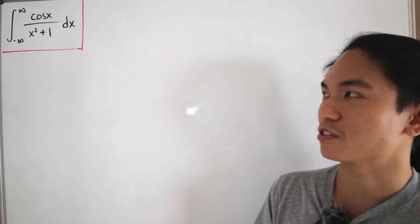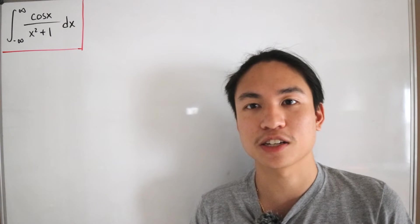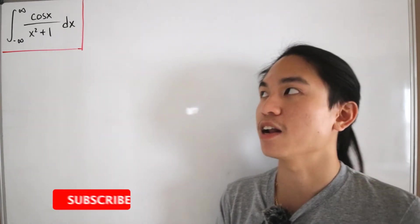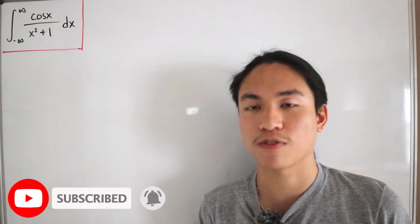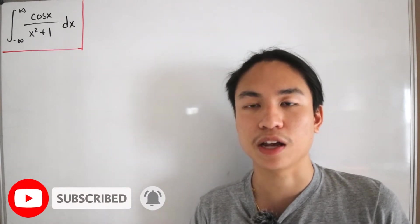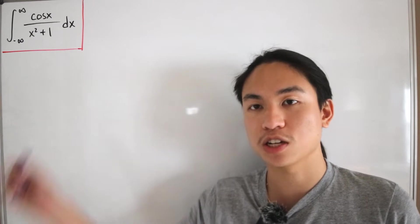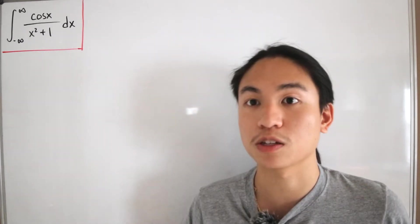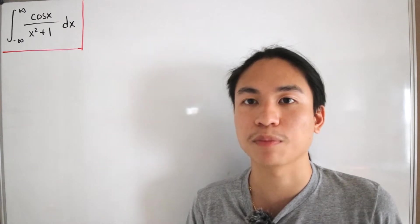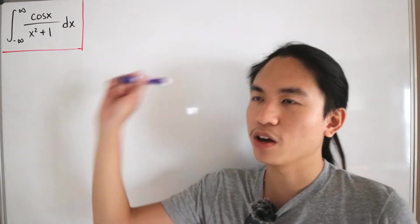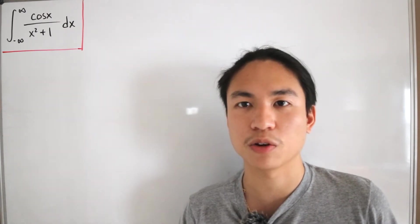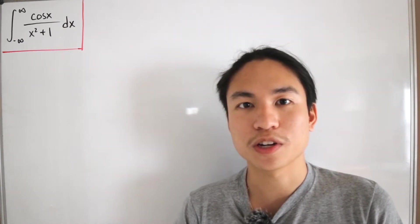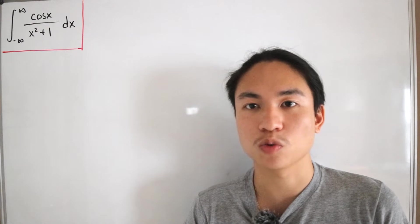To start off the semester just right, I thought we'd tackle a popular improper integral: the cosine of x divided by x squared plus one, dx from negative infinity to positive infinity. This one is popular enough that you can search it and get tons of solutions, mainly if you solve it the traditional way by applying complex analysis. If you've seen this integral before, you probably already know the answer.